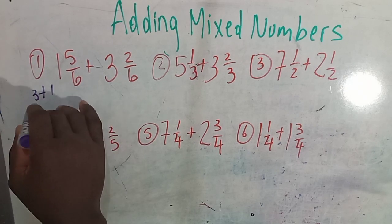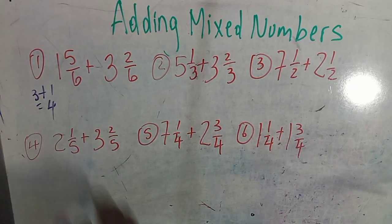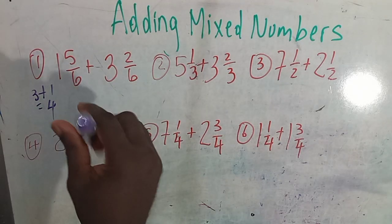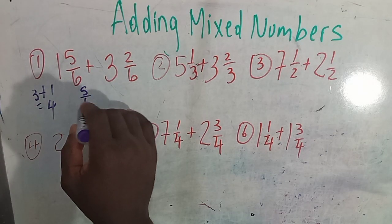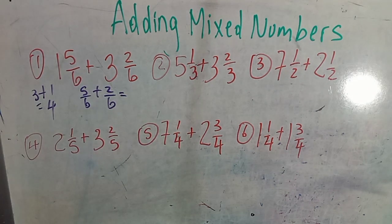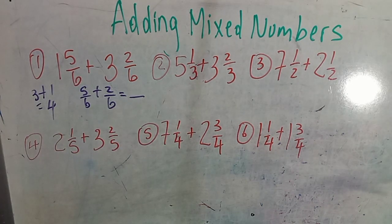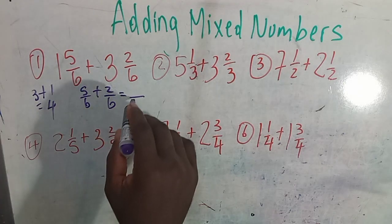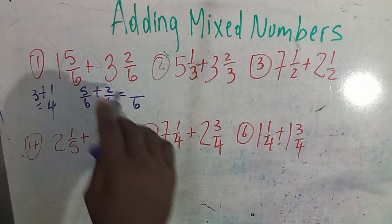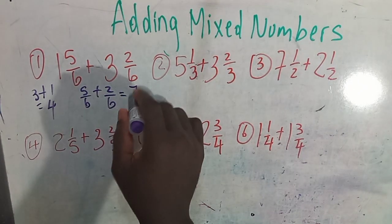3 plus 1 equal 4. Then you deal with the fractions: 5 over 6 plus 2 over 6. When you're adding fractions with the same denominator, they are like fractions. You put back the same denominator and add the numerators, which gives you 7.